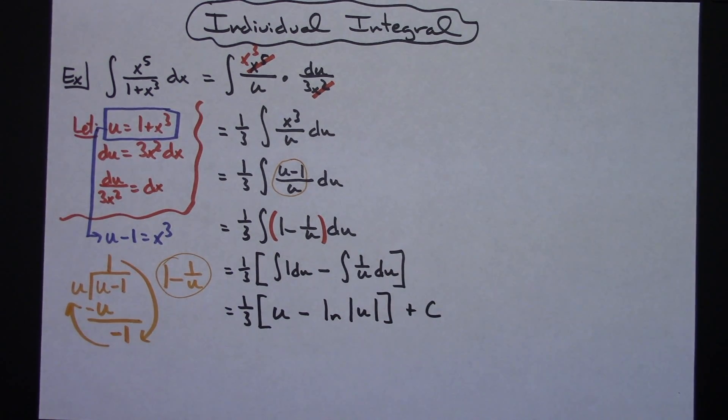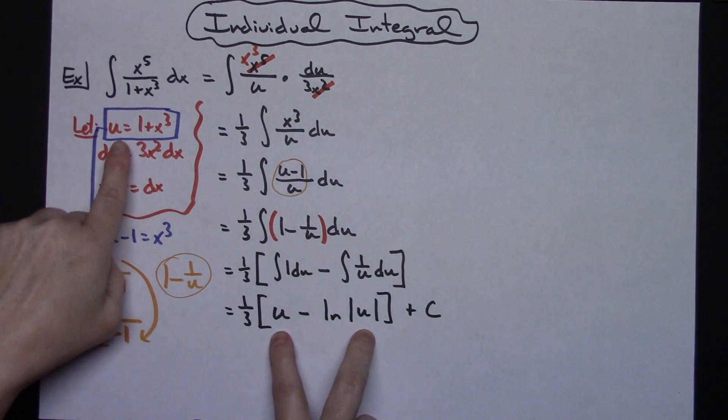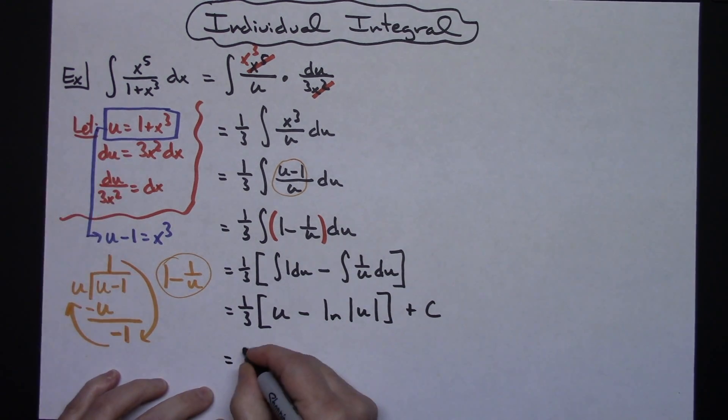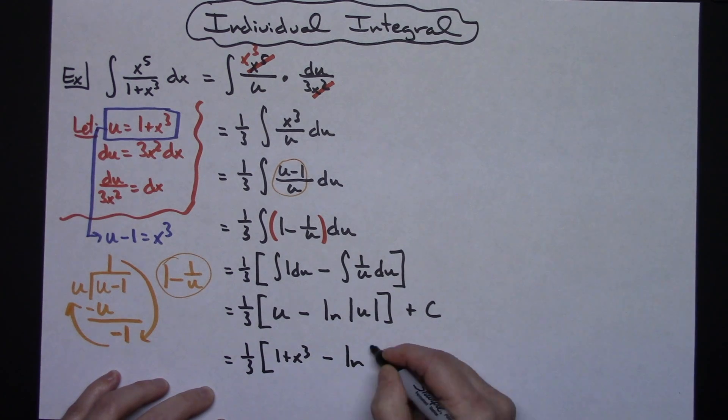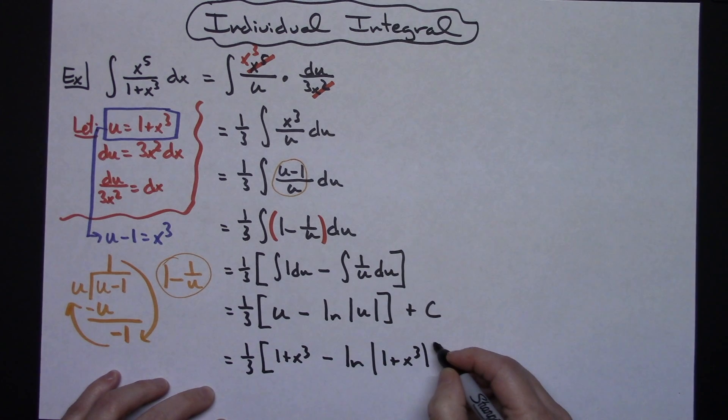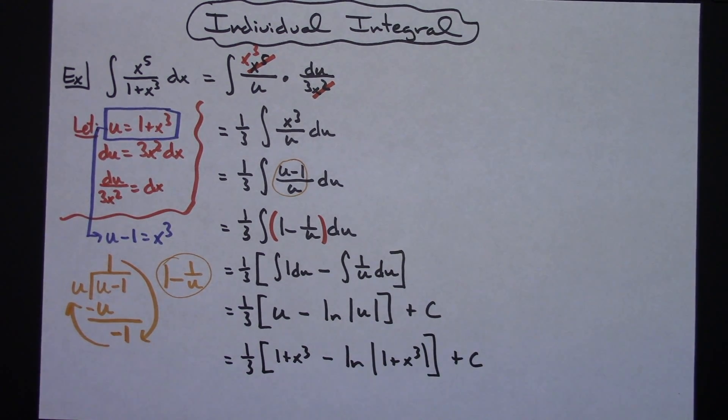At this point I'm going to come back up here to where I originally defined my u and just make that substitution. So I'm going to have 1/3 times the quantity 1 plus x to the third minus natural log absolute value 1 plus x to the third, and then a plus c. If you wanted you could go ahead and distribute that 1/3. You wouldn't have to. This is an equivalent answer, so you could stop right there.